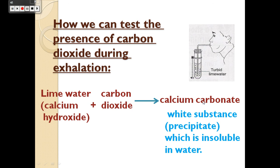This calcium carbonate is a white substance which is insoluble in water. So, the calcium carbonate will precipitate in the tube, and the clear lime water changes to become turbid or milky. Lime water reacts with Carbon Dioxide to form calcium carbonate — a white substance that is insoluble in water, which is why it precipitates.